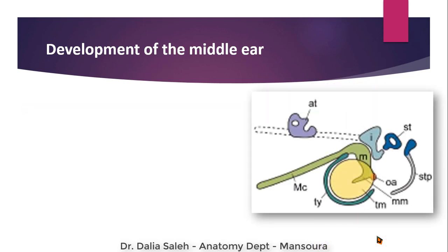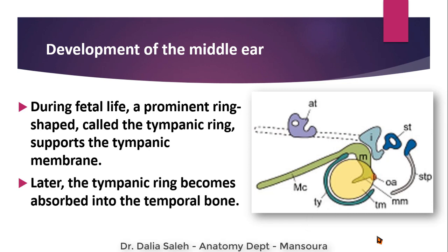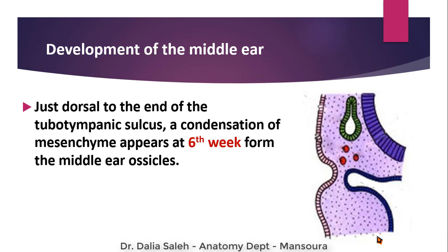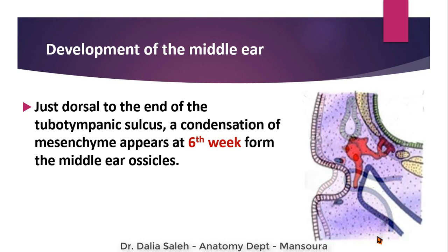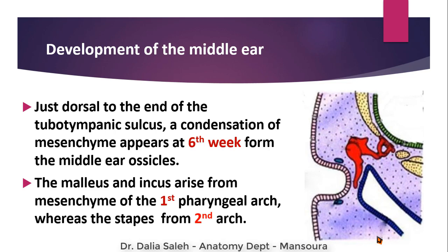This is another diagram showing the development of the eardrum. During fetal life, a prominent ring called the tympanic ring supports the tympanic membrane during its development. Later, this tympanic ring becomes absorbed into the temporal part. Condensation of mesenchyme appears at the sixth week of development, and this mesodermal condensation forms the middle ear ossicles — the malleus, incus, and stapes. The malleus and incus arise from the mesenchyme of the first pharyngeal arch, while the stapes arises from the mesenchyme of the second pharyngeal arch.